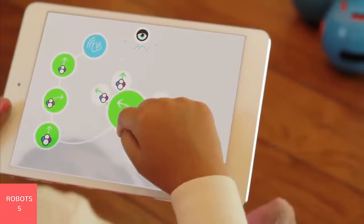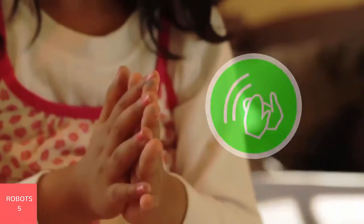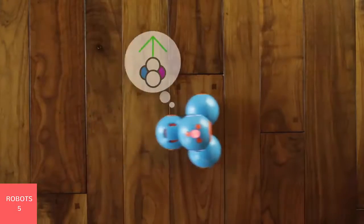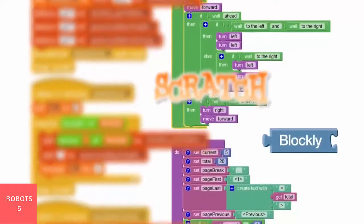Bo and Yana are designed to be programmed by children using our touch interface with music, animation, and stories, as well as existing languages like Scratch and Blockly.